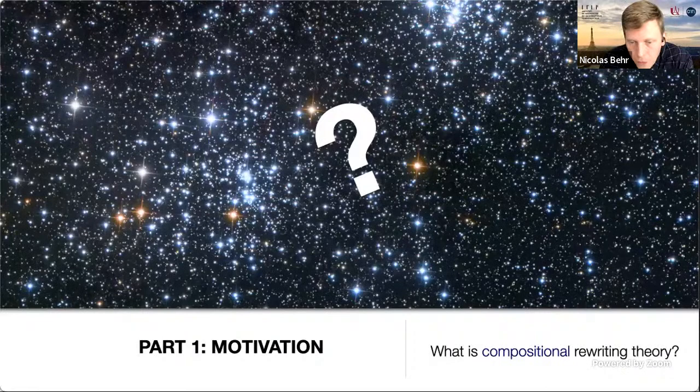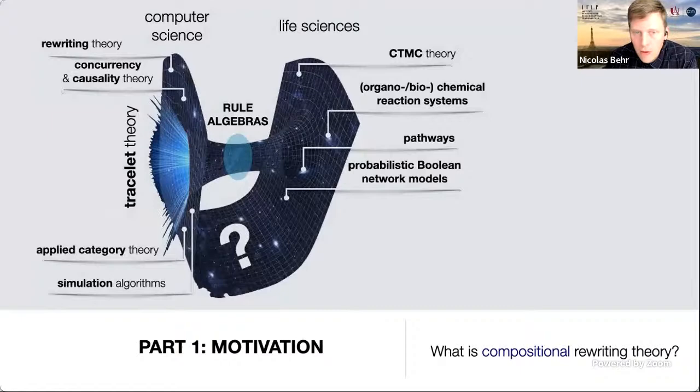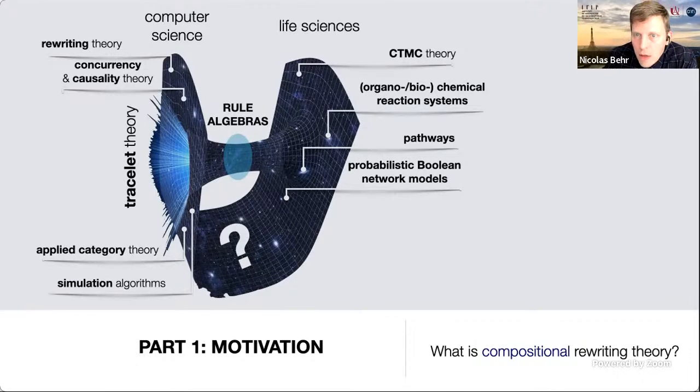What is compositional rewriting theory useful for? Rather than stating compositionality directly, I'll motivate what is the consequence of a rewriting theory being compositional. I was personally motivated to use rewriting theory in the life sciences — chemistry, biochemistry, organic chemistry — but also for social network science and combinatorics. The main point is that without compositionality you cannot translate standard concepts such as Markov chain theory or the notion of pathways and reaction systems into the formal semantics of applied category theory.